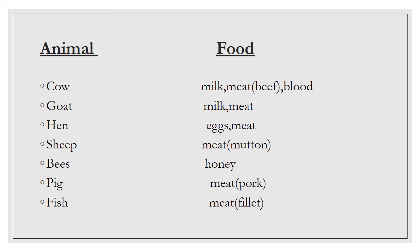These animals are very important to us. Some give us food. A cow gives us milk, blood, and meat. Cow's meat is called beef. We drink milk from a cow.